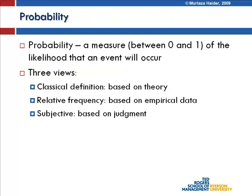Probability is a measure between 0 and 1 of the likelihood that an event will occur. What is the probability of rain today? What is the probability of your favorite team winning the match? There are three views for probability: the classical definition based on theory, one based on relative frequency from empirical data, and subjective views based on judgment.